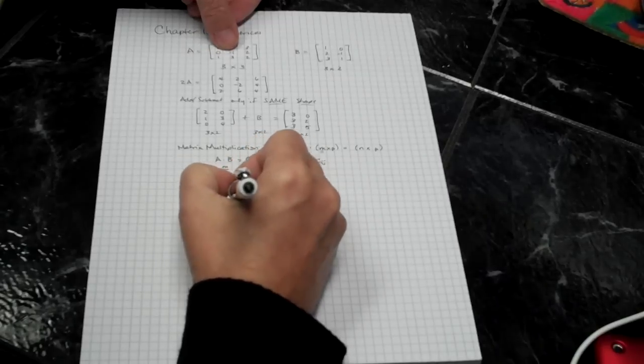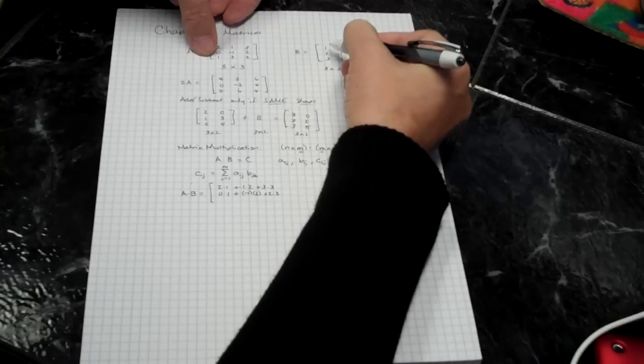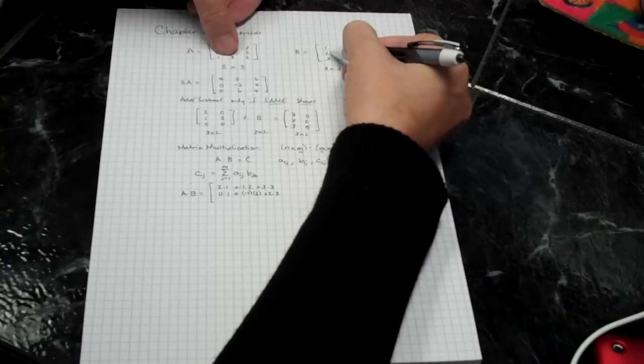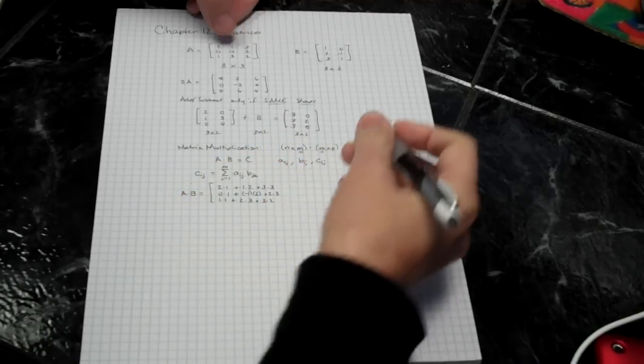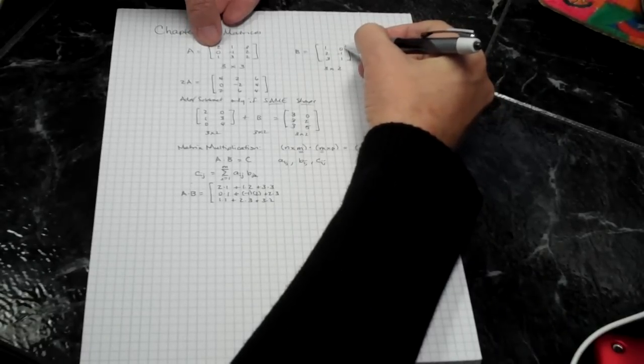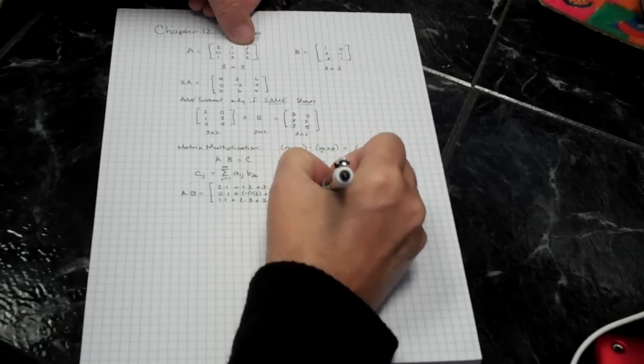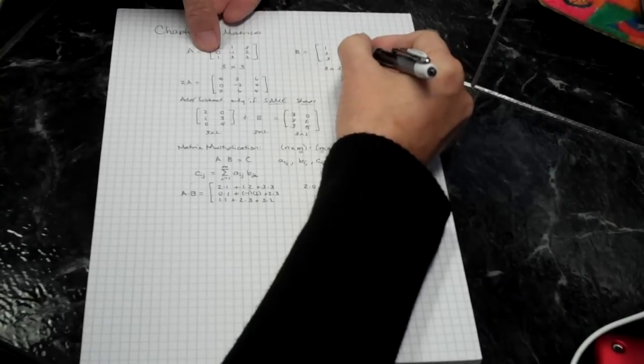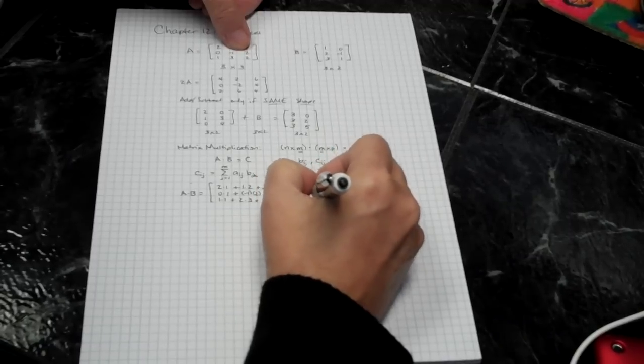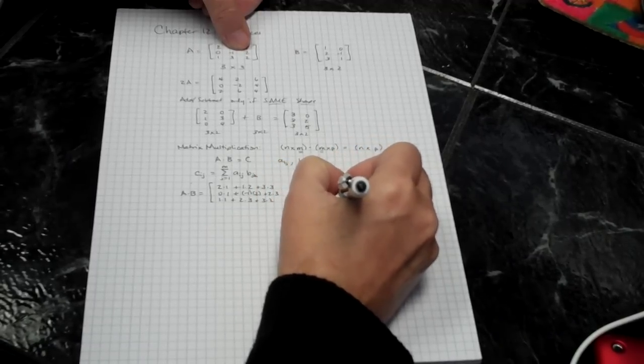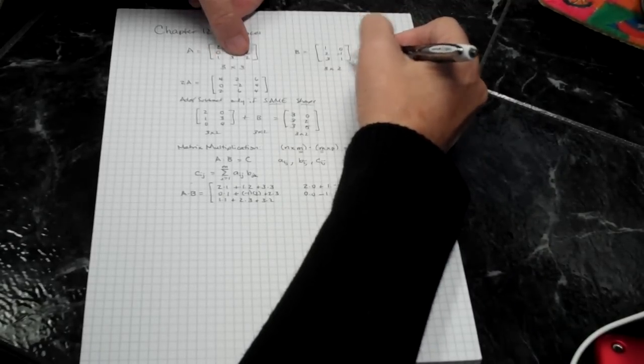And I take the second row, first column, 0 times 1, negative 1 times 2, plus 2 times 3. And finally down to the bottom, 1 times 1, 2 times 3, 3 times 2. And now I'm going to do this for the second column. So 2 times 0, 1 times negative 1, 3 times 1. 0 times 0, negative 1 times negative 1, 2 times 1. And finally the bottom row, last column, 1 times 0, 3 times negative 1, 2 times 1.